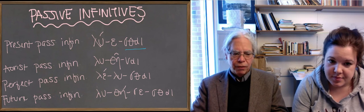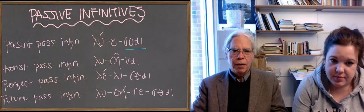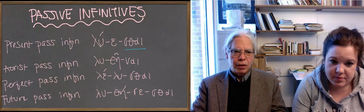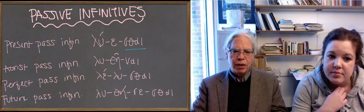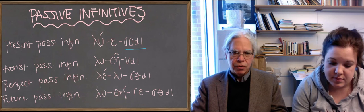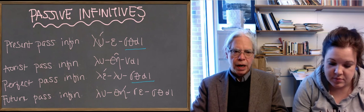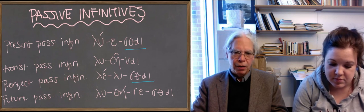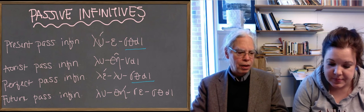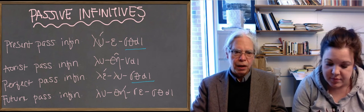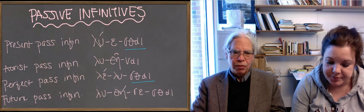And the present infinitive has recessive accent, so it's λύεσθαι (luethai). Notice that the perfect passive infinitive has the same ending, ψαι, and you just tack it on without a thematic vowel, because the perfect passive is not a thematic verb form. So it's λελύσθαι (leluthai), again with recessive accent.